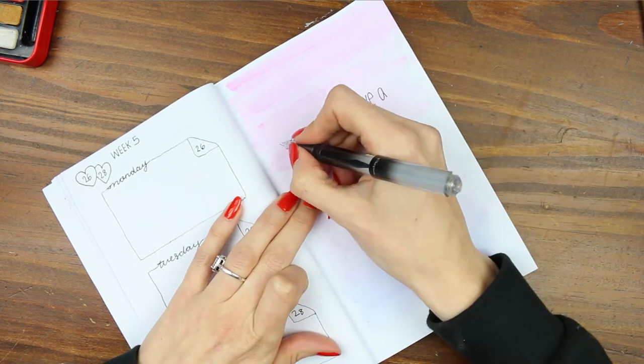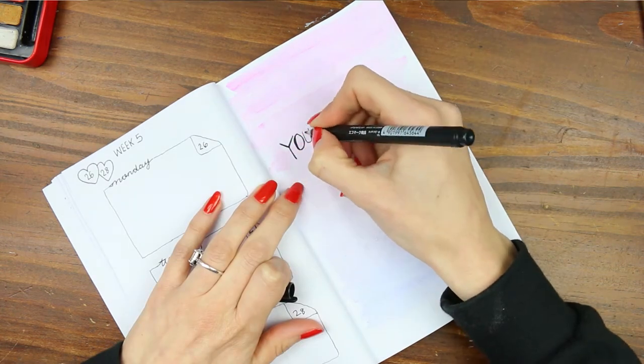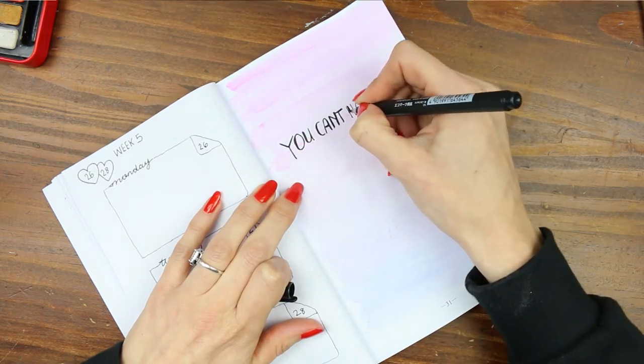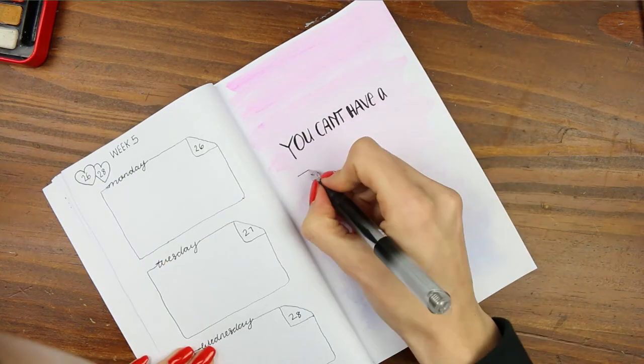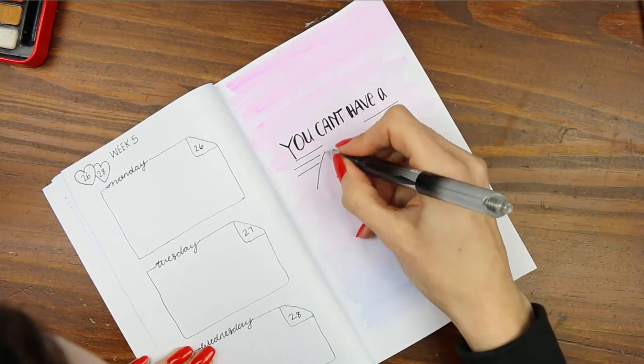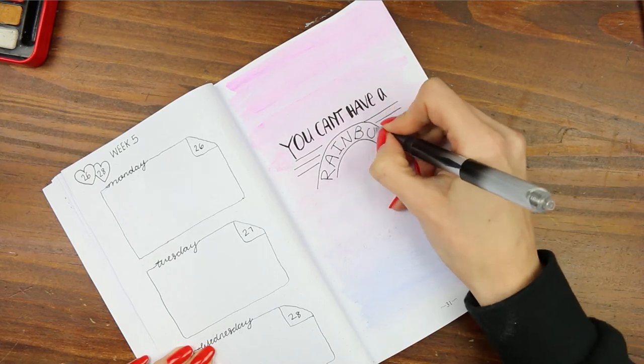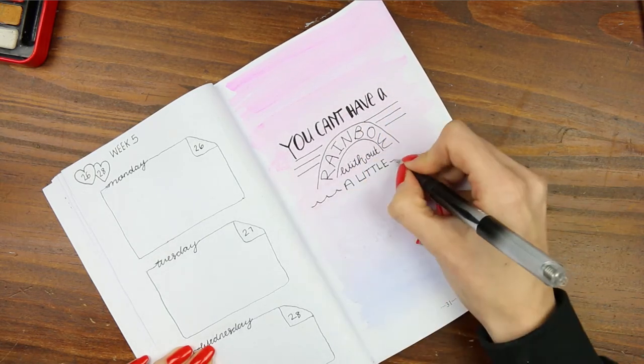I then started to write my quote at the top and I switched to my Tombow brush pen which I kind of wish I hadn't because I need a little bit more practice with so I went back to my original pen and just finished writing my quote which says you can't have a rainbow without a little rain.